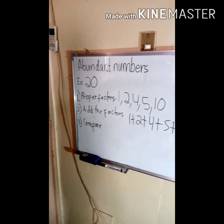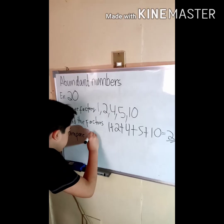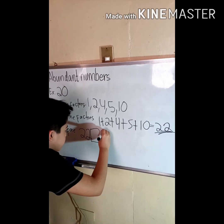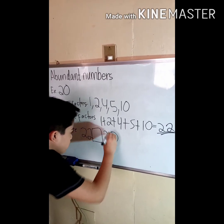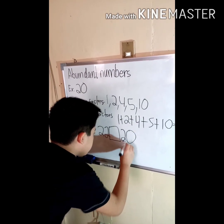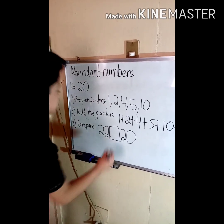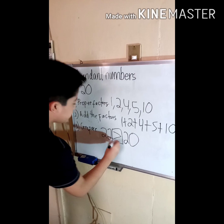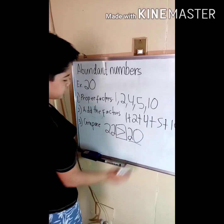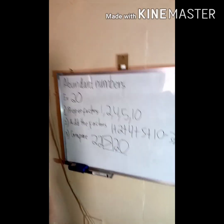Now we need to compare that sum of the proper factors with the given number. We put the greater-than sign, meaning 22 is greater than 20, so 20 is an abundant number.